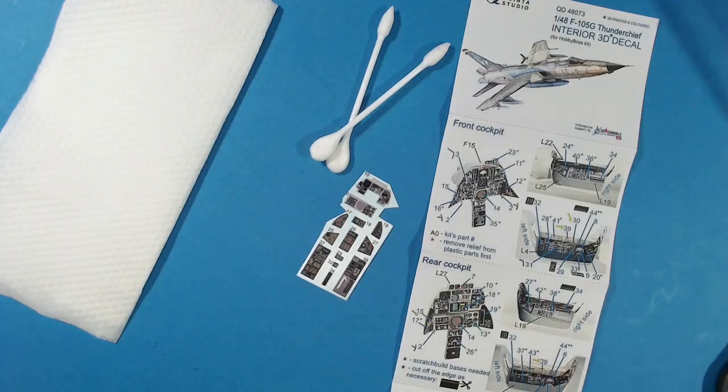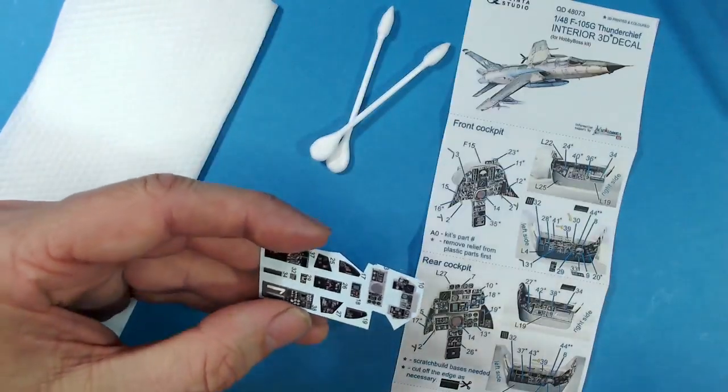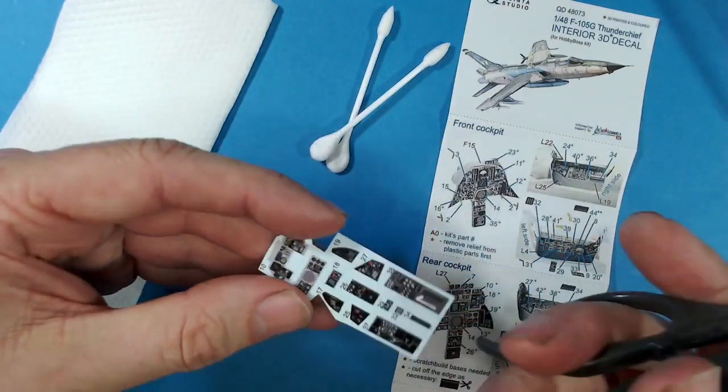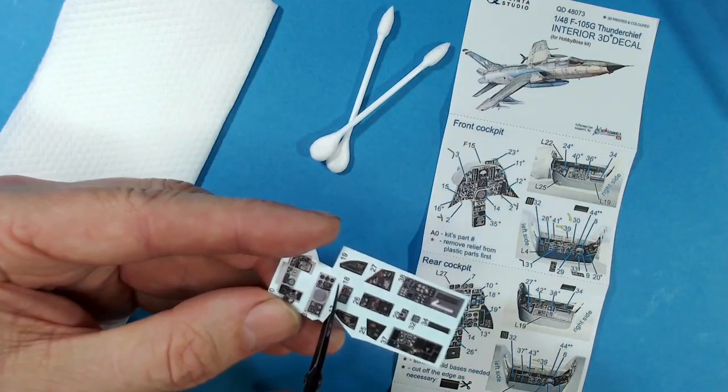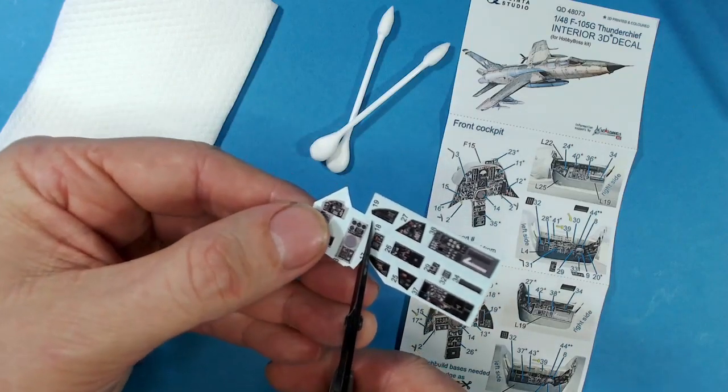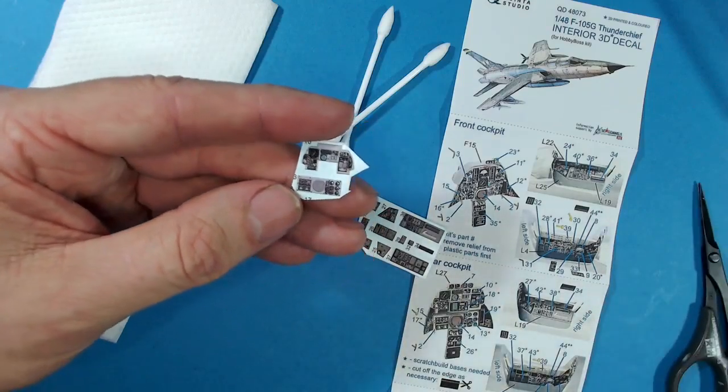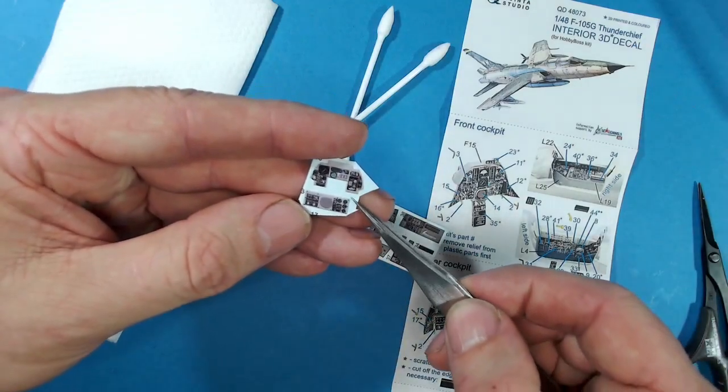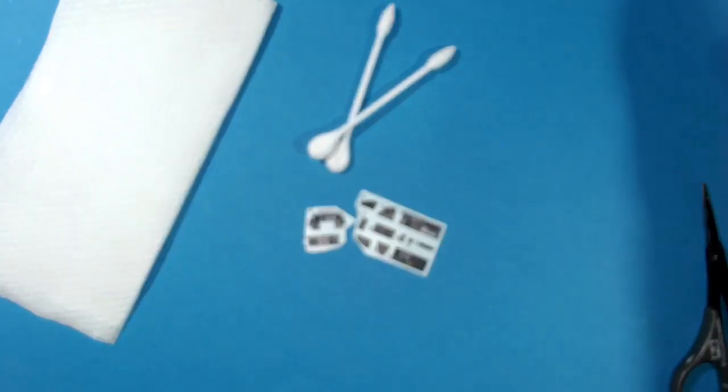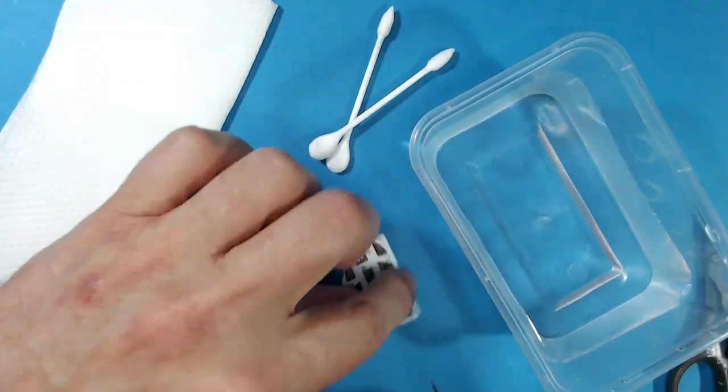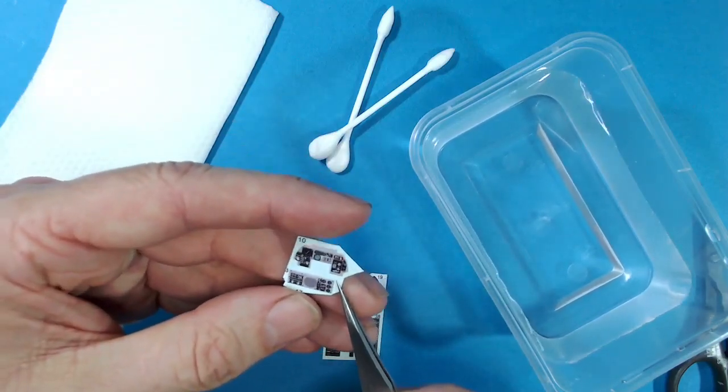As part of my testing, I looked at the instructions and realized that these are not normal decals. That's the first thing you need to realize is that they're not a normal decal. They do come on decal backing paper. And so what I'll do here is I will simply cut off just a couple of pieces. I'll bring in some warm water, just like normal decals, because in fact, the backing paper is normal decal backing paper.